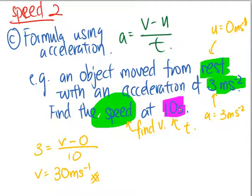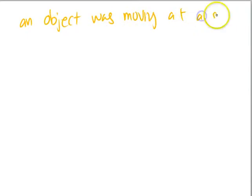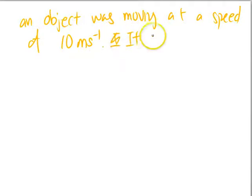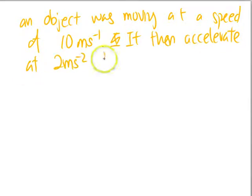However, things can get more complicated. This one, we started from rest. Sometimes we might say that an object was moving at a speed of 10 meters per second. It then accelerate at 2 meters per second square for 4 seconds. Find the final speed.